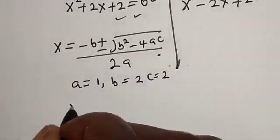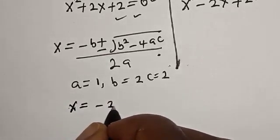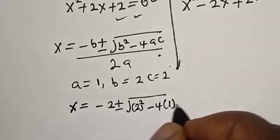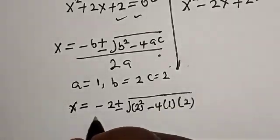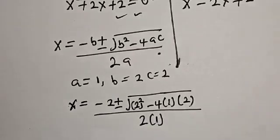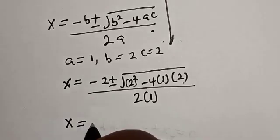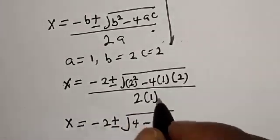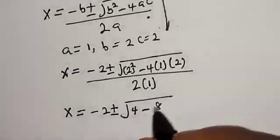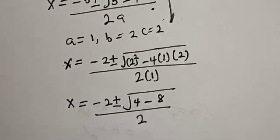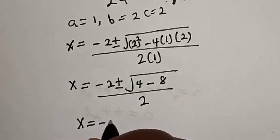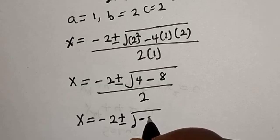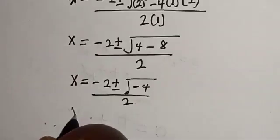Let's substitute. We have x is equal to minus 2 plus or minus square root of 2 squared minus 4 multiplied by 1 multiplied by 2, divided by 2 multiplied by 1. This gives x is equal to minus 2 plus or minus square root of 4 minus 8, divided by 2.